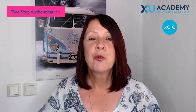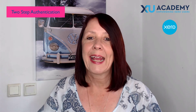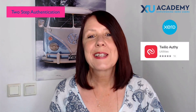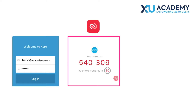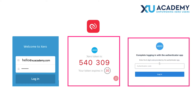I went to the App Store and chose an app suitable for my iPhone and my Mac. The app I chose is called Twilio — it doesn't cost anything. When I log into the Xero account, I put in my email and password as normal, then I click on the app and find the six-digit code, which lasts for up to 30 seconds and is displayed on my iPhone screen.